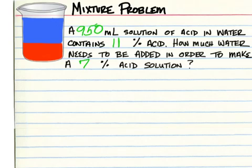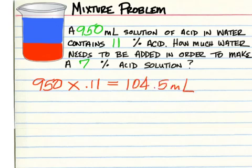The solution for the practice problem: we need to figure out what 11% is of 950. So 950 times 0.11 is going to give us 104.5, and that is milliliters of acid.